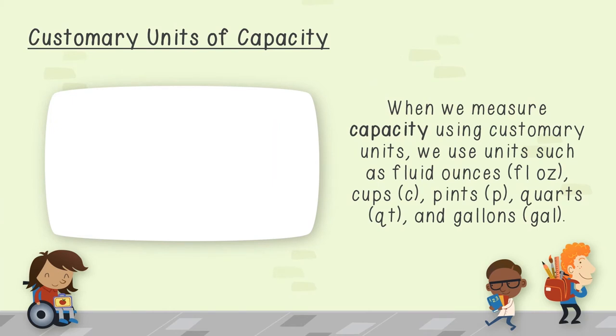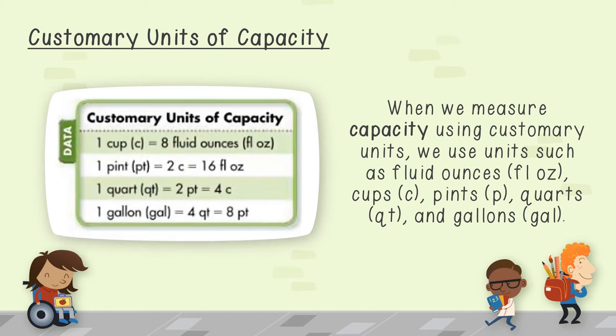When analyzing units of measurement, we often talk about them using two different systems: the metric and the customary. Today, we will be focusing on the customary units for both capacity and weight. When we measure capacity using customary units, we use units such as fluid ounces, cups, pints, quarts, and gallons. The table shows some equivalents of the units. Take a look at the table — what relationships do you notice?